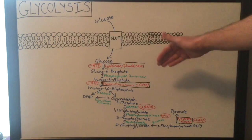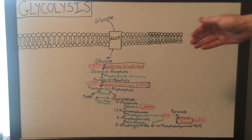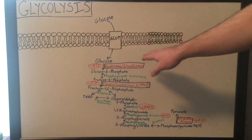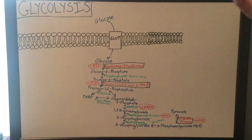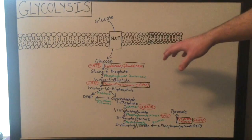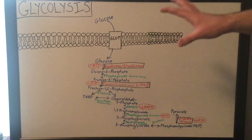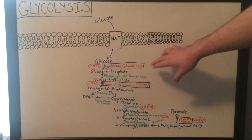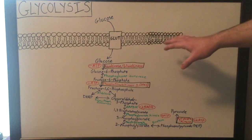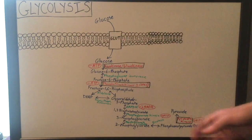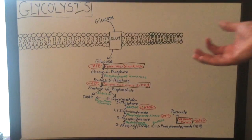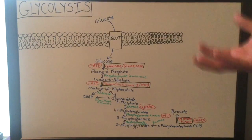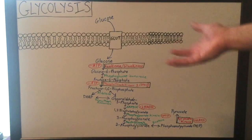So once the glucose enters the cell, glucose will actually get phosphorylated by hexokinase. Hexokinase is an enzyme present in many different cell types, but in certain cell types you'll come across a related enzyme called glucokinase. Hexokinase and glucokinase are not the same enzyme, but they do perform the same function — they phosphorylate glucose.